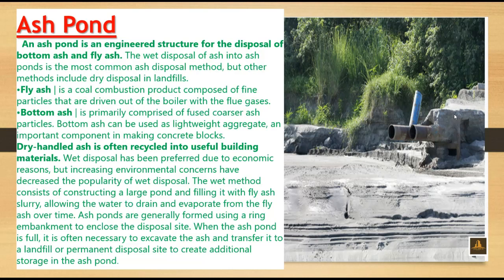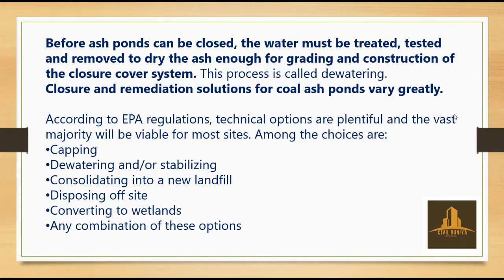Ash ponds are generally formed using a ring embankment to enclose the disposal site. When the ash pond is full, it is often necessary to excavate the ash and transfer it to a landfill or permanent disposal site to create additional storage capacity. Before ash ponds can be closed, the water must be treated, tested, and removed to dry the ash — a process called dewatering.